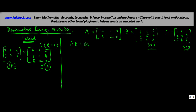Let's compute A into (B+C). First row into first column: 2 into 2 is 4, plus 1 into 4 is 4, plus 4 into 8 is 32 — giving 40. First row into second column: 2 into 7 plus 1 into 9 plus 4 into 12 — giving 71. First row into third column: 2 into 2 plus 1 into 4 plus 4 into 8 — giving 40.